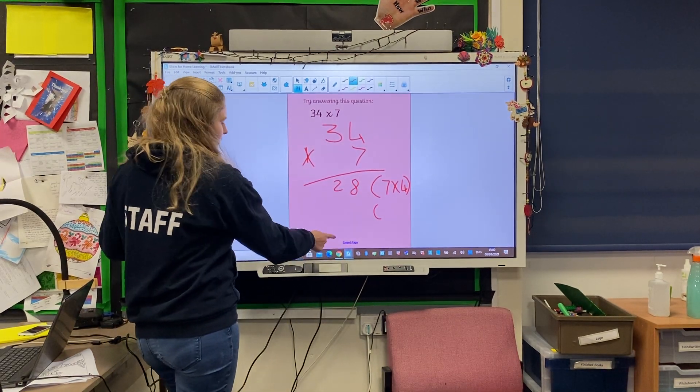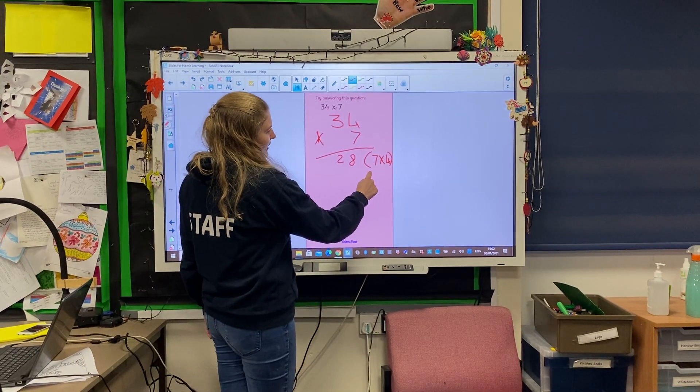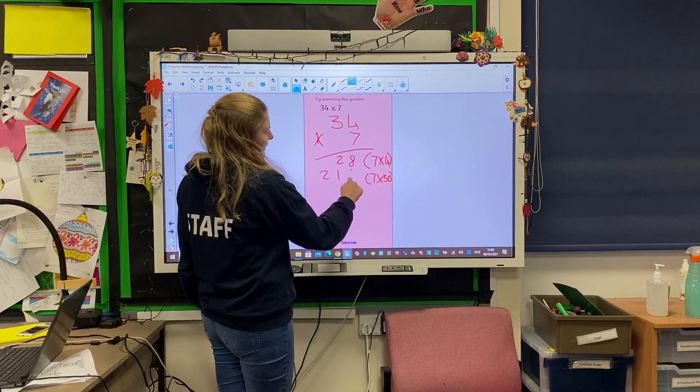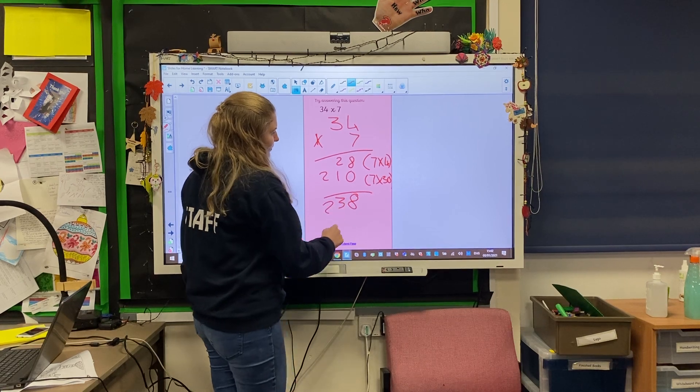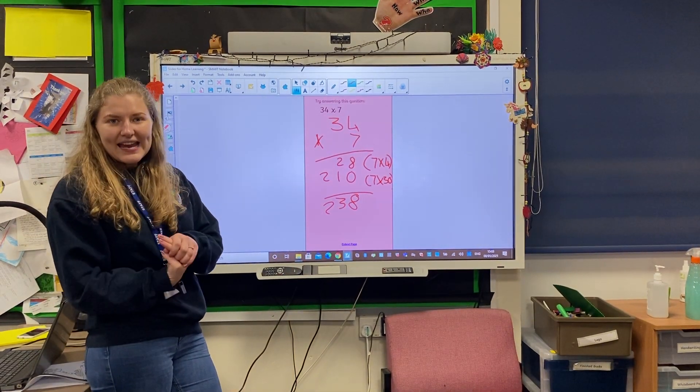and we're going to do 7 times 30 which is going to be 210. Let's add those up, we've got an 8, a 3, and a 2. So 34 times 7 is going to be 238. Amazing.